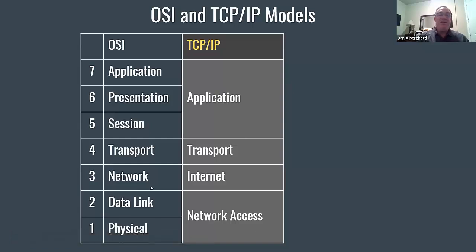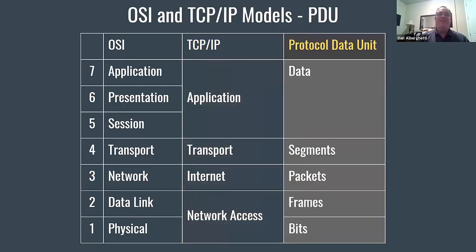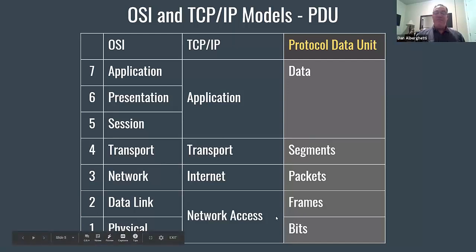Layer three, the network layer in the OSI model, is the internet layer in the TCP/IP model — because this is the layer of IP. Transport is transport — that's the easiest. The session, presentation, and application layers are all bundled into one application layer. At the application layer, we're just dealing with data; it hasn't been broken up into pieces yet. The data gets broken up at layer four into segments; at layer three we call them packets; at layer two, frames; and at layer one, bits.